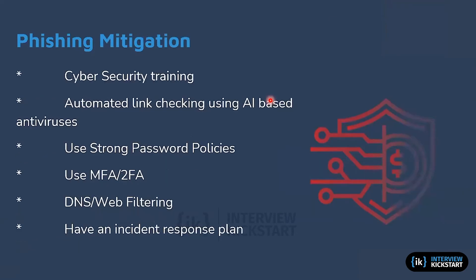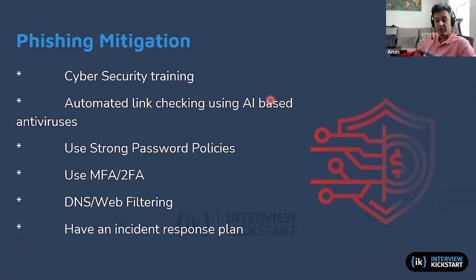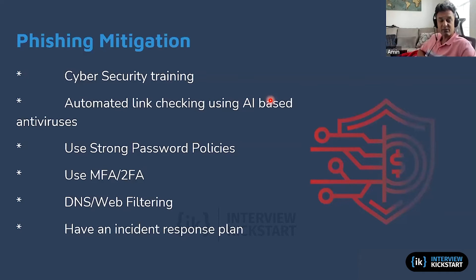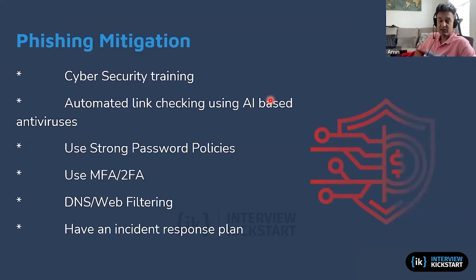How can you prevent phishing? The first thing is cybersecurity training. Compliance systems actually perform cybersecurity training, which is important — you have to teach people that this is something that might happen and how to protect themselves. Automated link checking and AI-based antiviruses are also helpful. If there's software that can automatically check a link in your email and mark it as bad, that's exactly what you want.